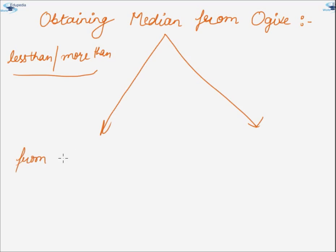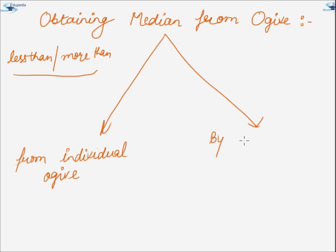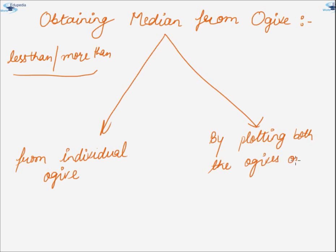The first one is from individual ogive and the second one is by plotting both ogives on the same graph. In this video, we will be discussing both of these methods.